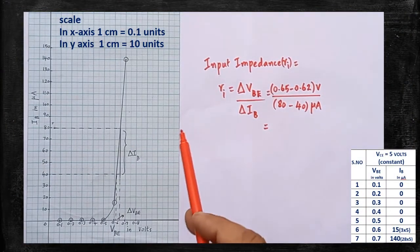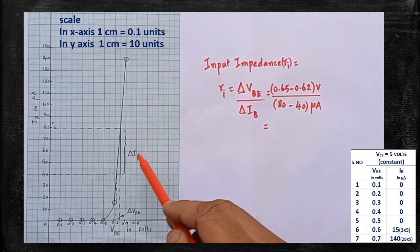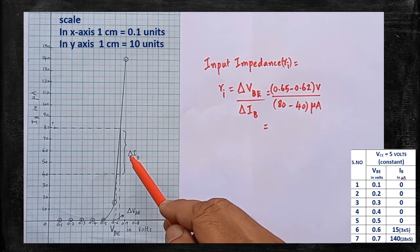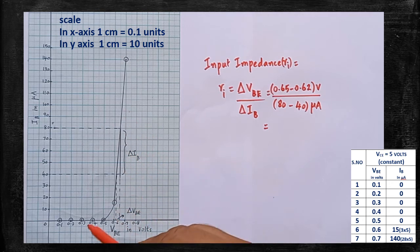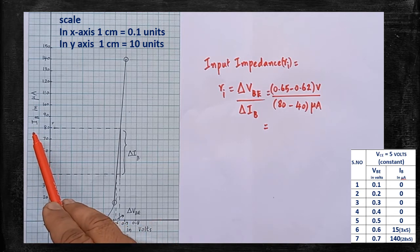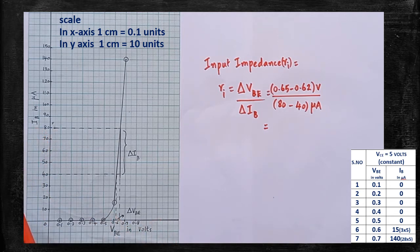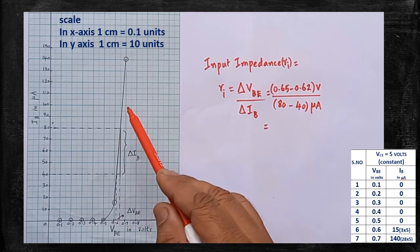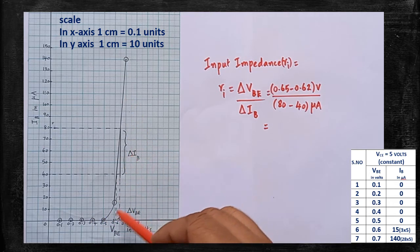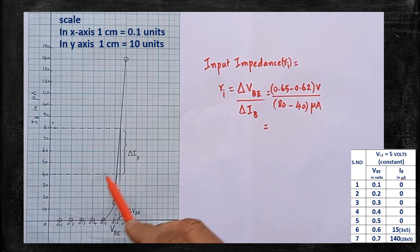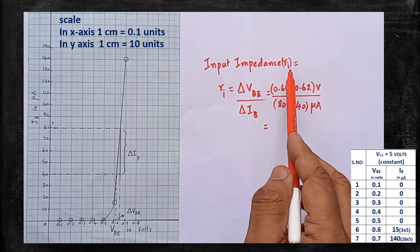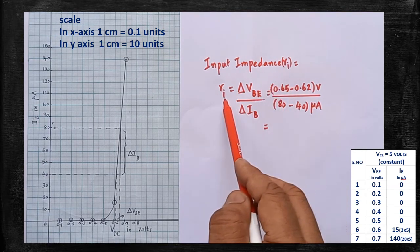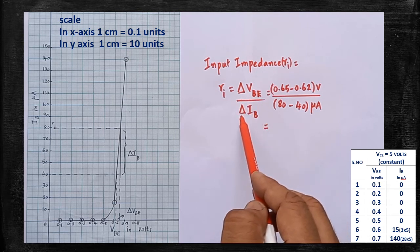Now we are going to calculate the input impedance of the transistor. Using the tabulated values, the graph is drawn. On the X axis, VBE values are taken; on the Y axis, base current IB is taken. After plotting all values and connecting the points, you get the input characteristics curve. The formula for input impedance is: RI = del VBE divided by del IB.